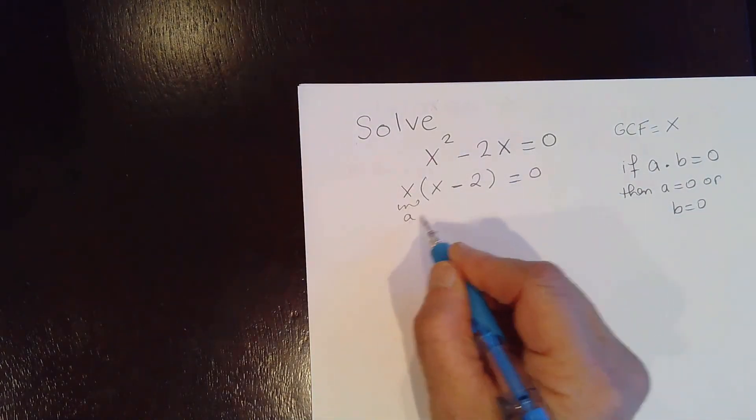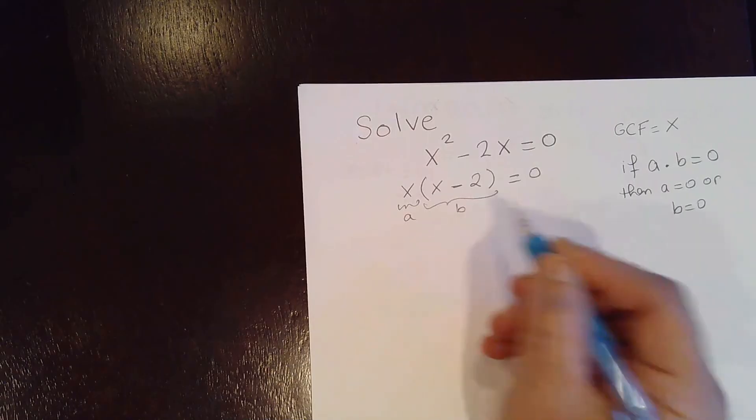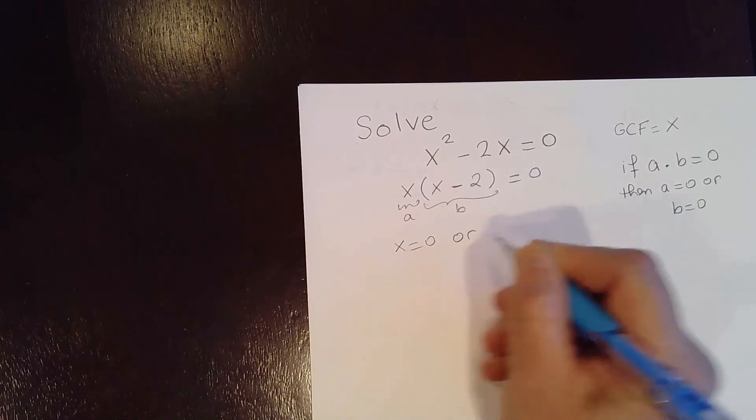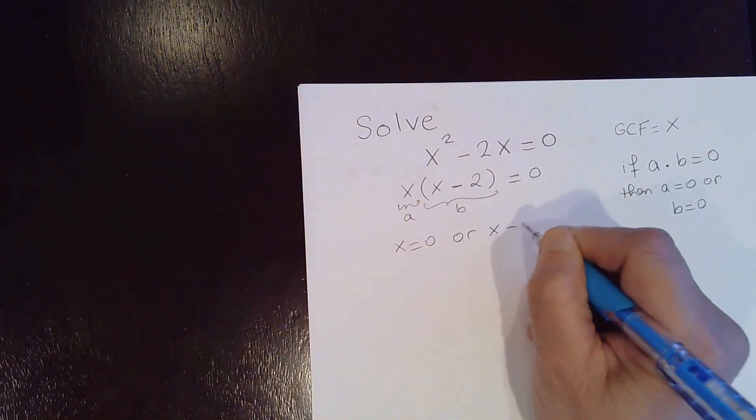Now, so you can think about it. This is a, and this is b. So that means a is equal to 0, that means x equal to 0, or b equal to 0, x minus 2 equal to 0.